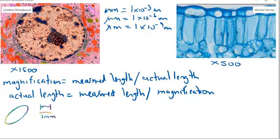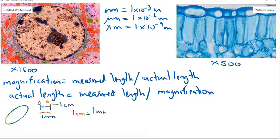So that means for every centimeter, it's going to be equivalent to one millimeter of magnification.